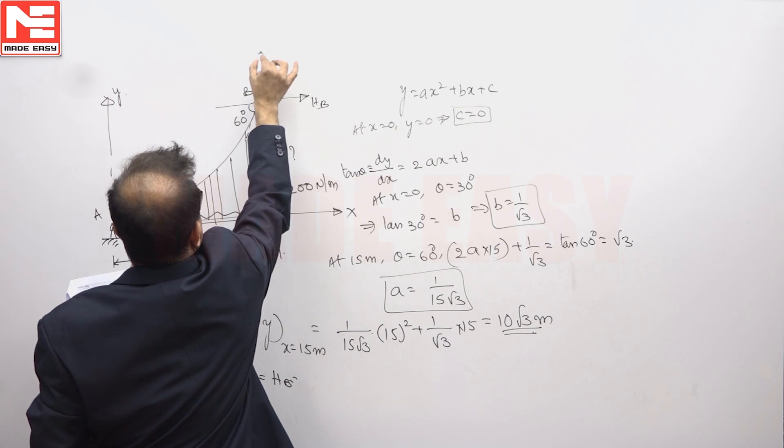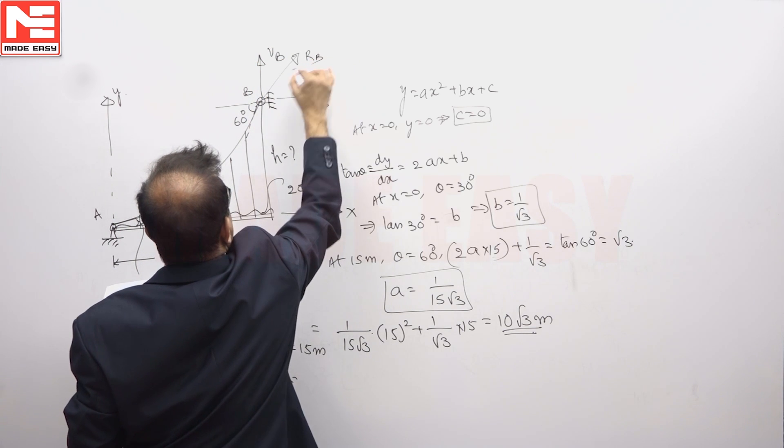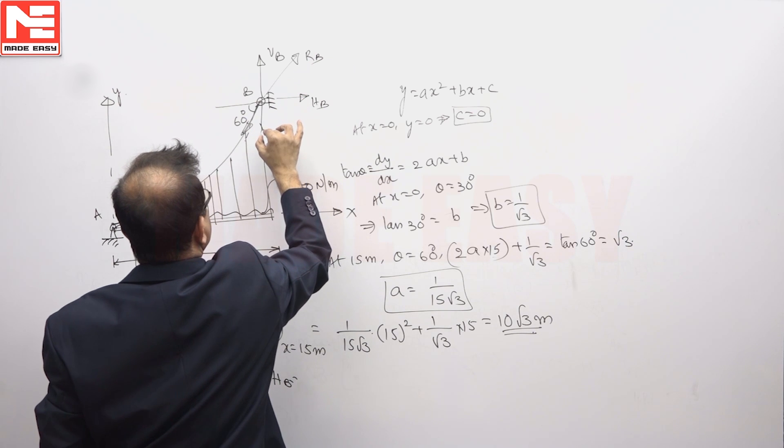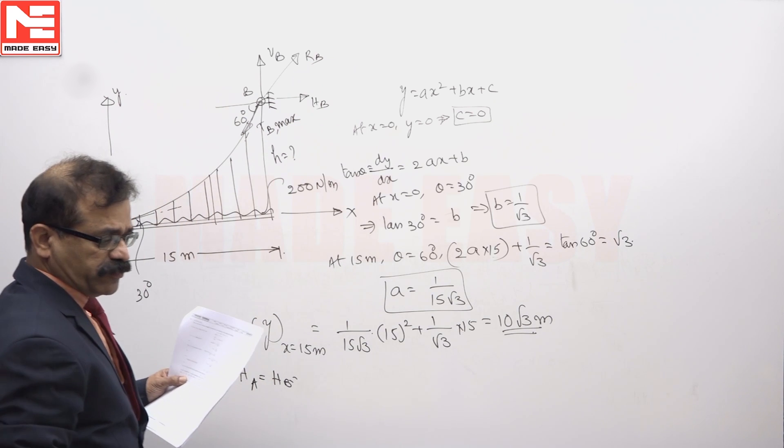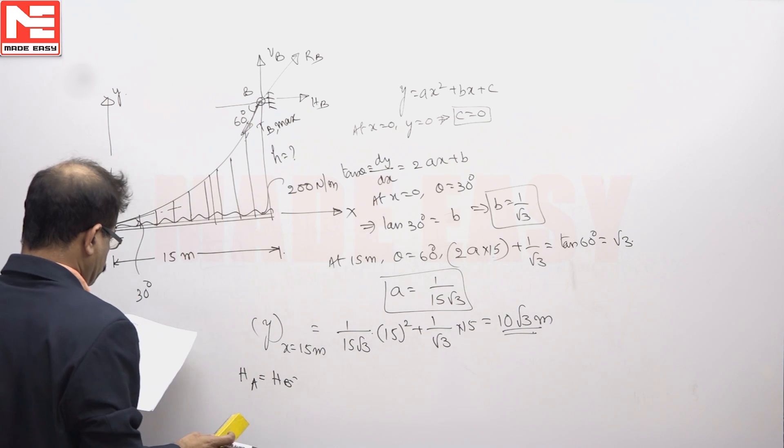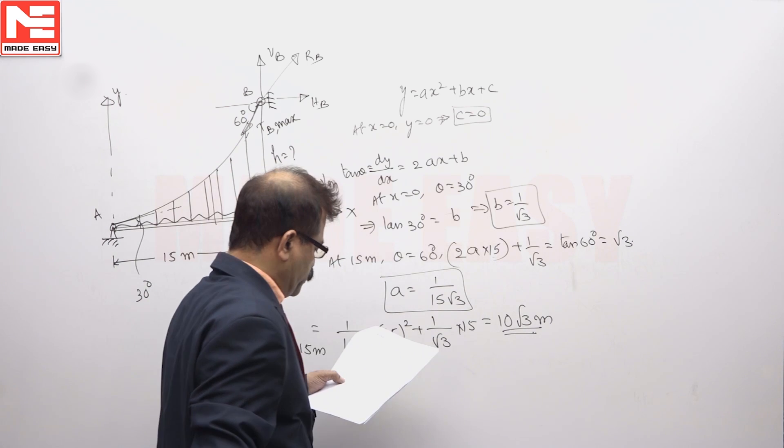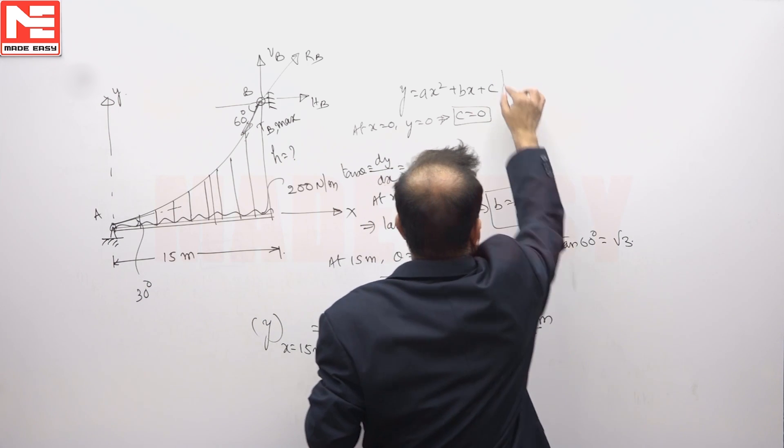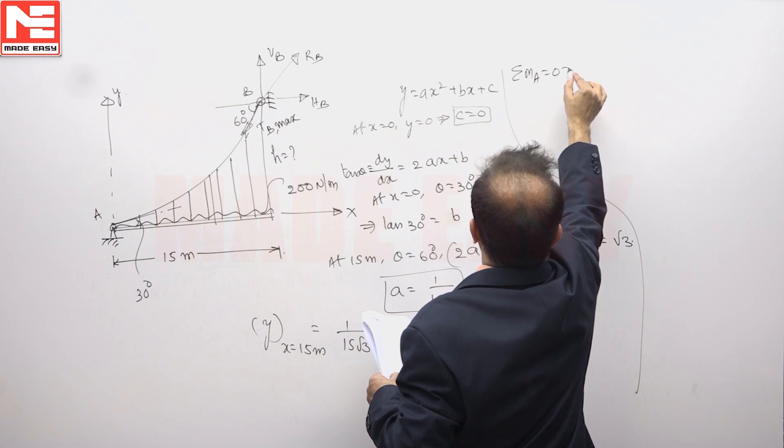This is VB, this is HB, this is RB, and this is the tension B. Tension at B, you will get maximum value. So to find that, we will take moments of all forces about A, take moments of all force about A equated to 0.